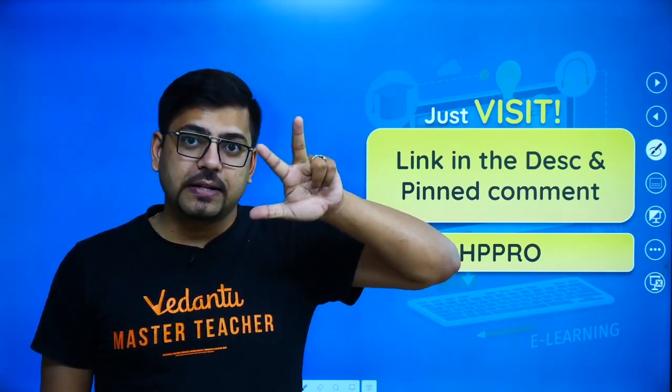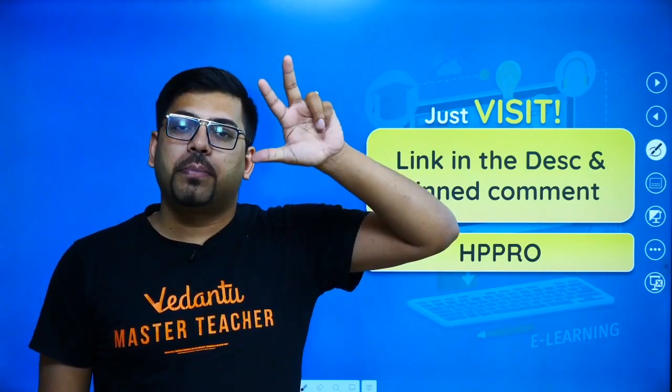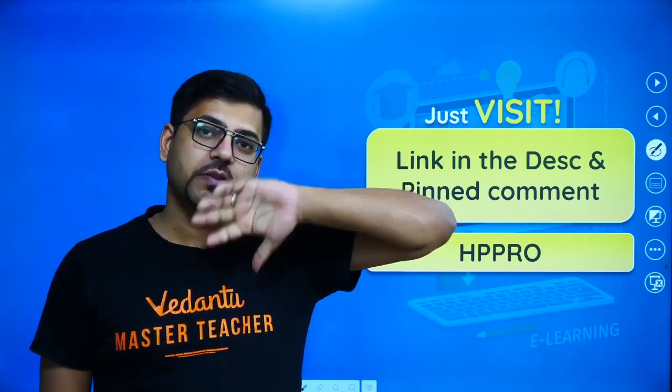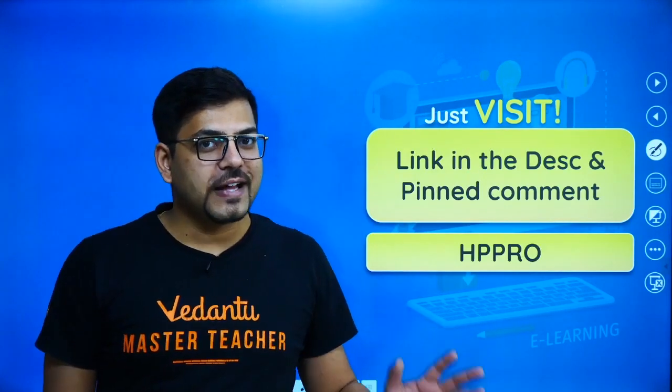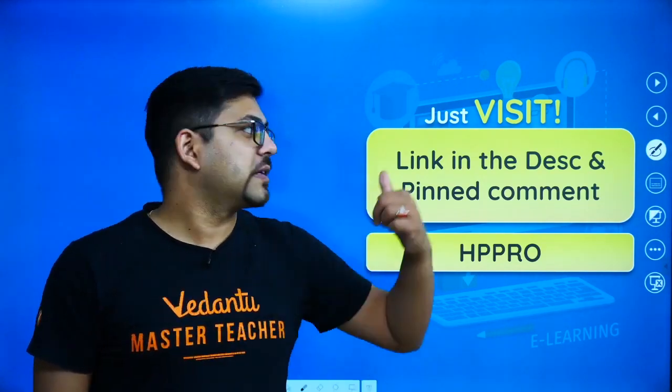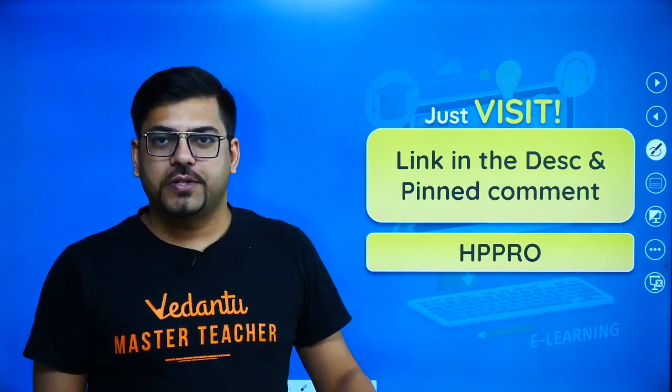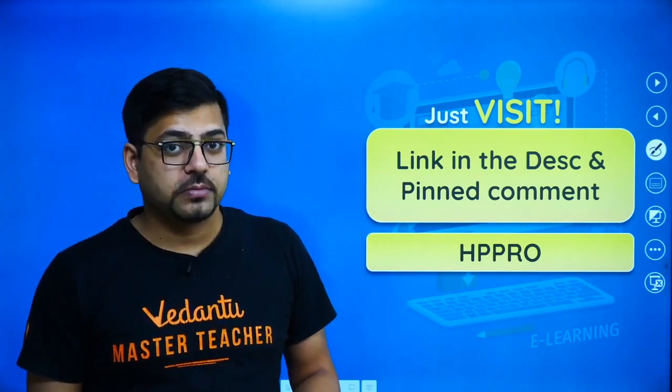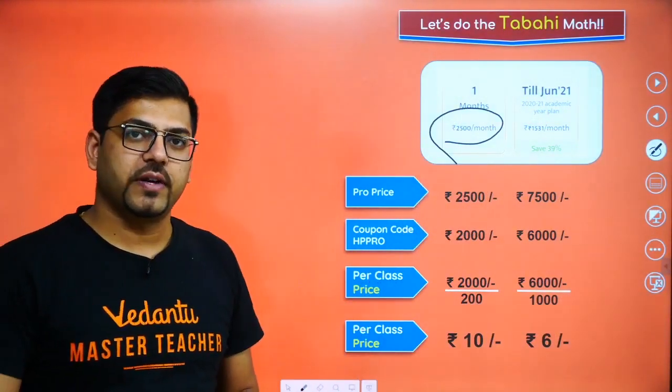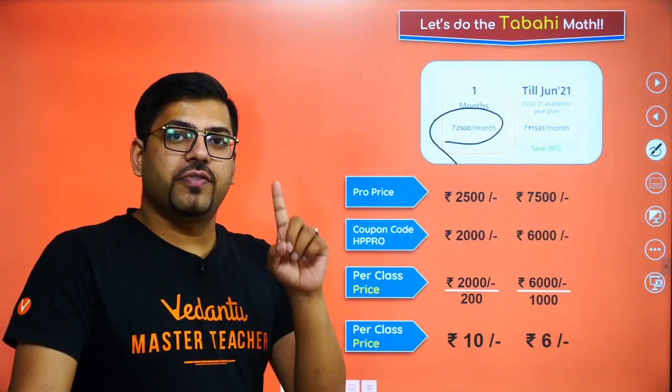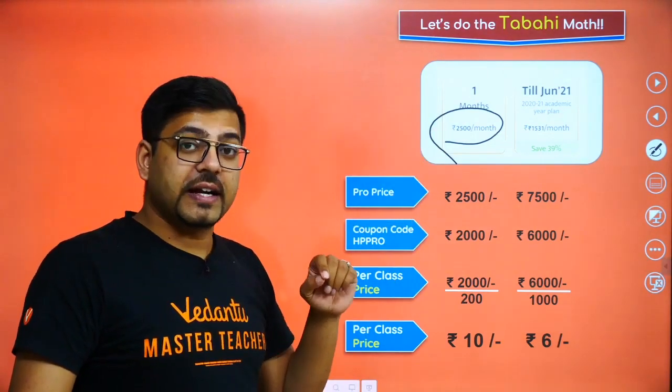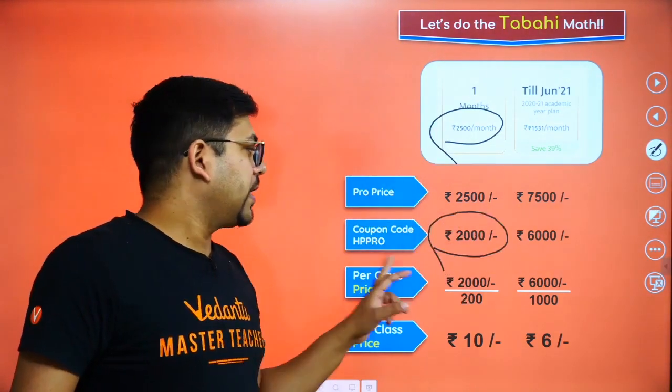In Vedantu you will get the All India Test Series and all the micro courses will be free for you. These are all the best features in Vedantu. What do you need to do? Go to the description box and register yourself. The price of Vedantu is 2,500 rupees per month. In this 2,500, Physics, Chemistry, Maths, Biology, Social Science, English, all included.